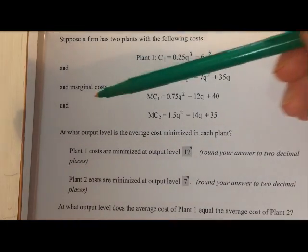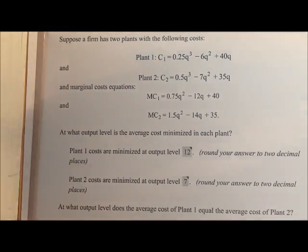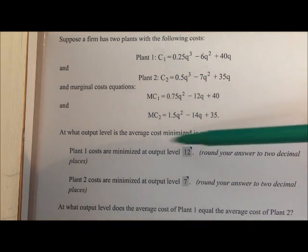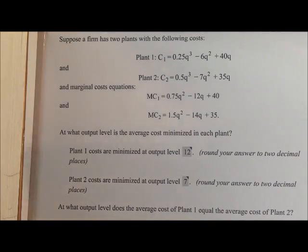And what we're asked is, at what output level is the average cost minimized in each plant? So we can look and ask in plant 1, what output level or quantity will minimize average total costs?